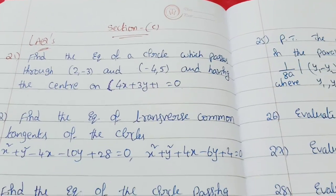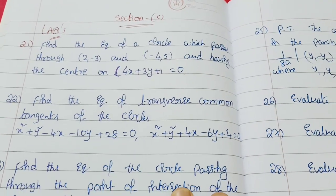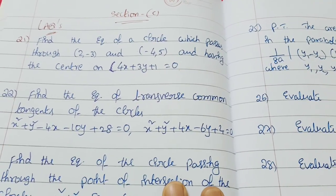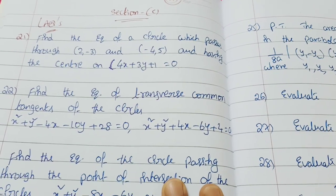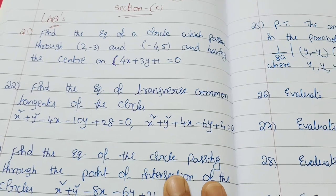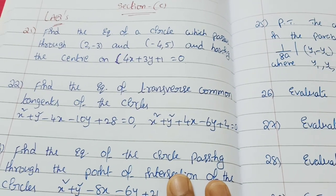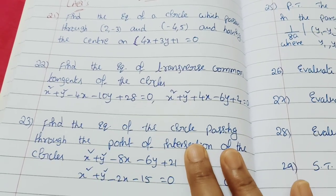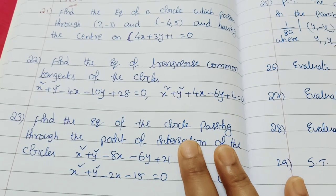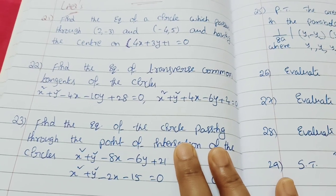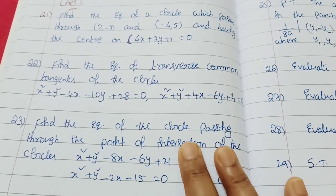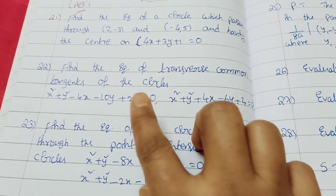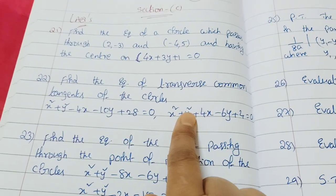Session C: one question on the circle which passes through two points and having the center - find the equation of the circle. Next, 22nd sum 25: one question on transversals and common tangents - find the transversals and common tangents.